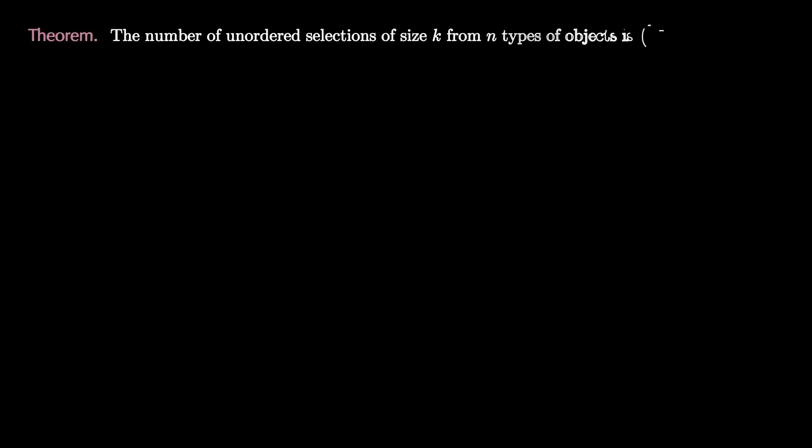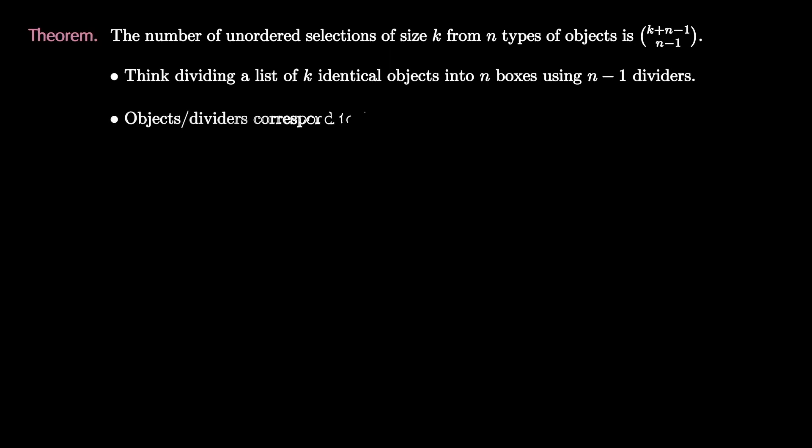As we have just seen the number of unordered selections of size k from n types of objects is (k+n-1) choose (n-1). We can think of this as dividing a list of k identical objects into n boxes using n minus 1 dividers. The objects and dividers correspond to zeros and ones in a binary string of length k plus n minus 1. So we can simply select n minus 1 positions in a binary string of length k plus n minus 1 giving us our formula.